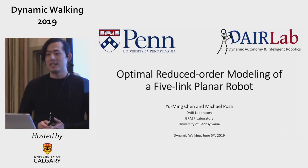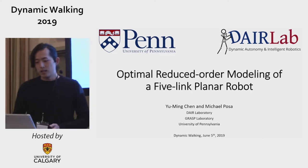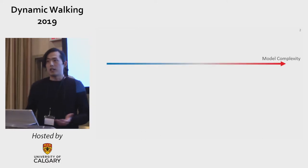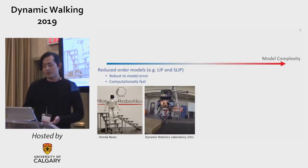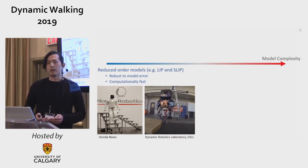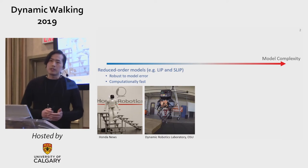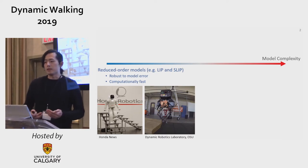Hi everyone, my name is Yu Min Chen and I'm a PhD student advised by Michael Posa. A lot of us like reduced order models. The planner and the controller based on this reduced order model tends to be robust to model disturbances, and planning with this reduced order model can usually be done in real time.